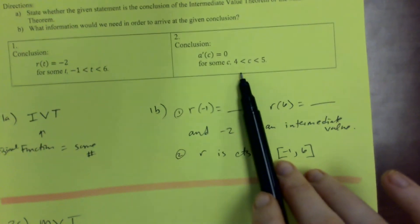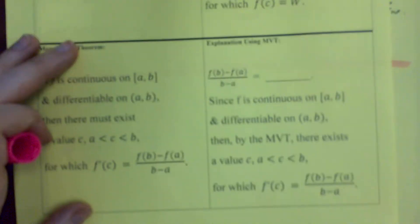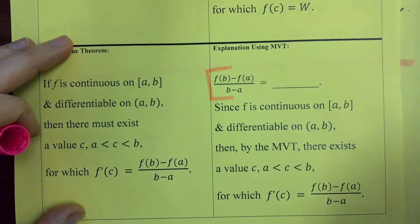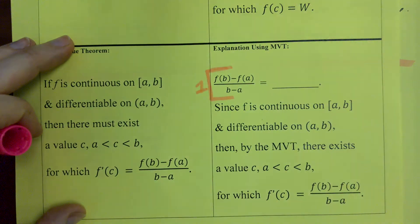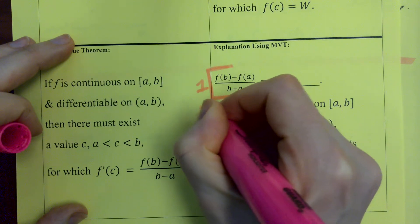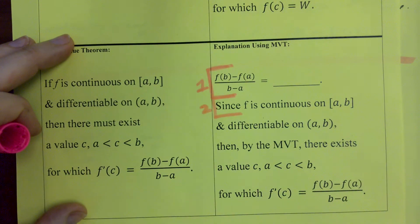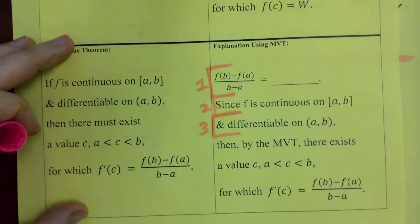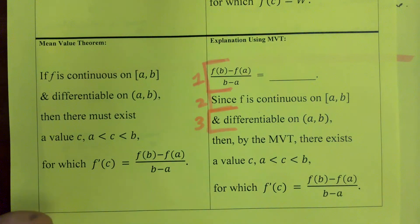We want A prime of C equals zero to be our conclusion. What do we need to say first? We need to state what the average rate of change is on the interval. Then we need to say that the function is continuous on the closed interval. Then we need to say that the function is differentiable — meaning its derivative exists everywhere on the open interval, so there are no sharp corners.